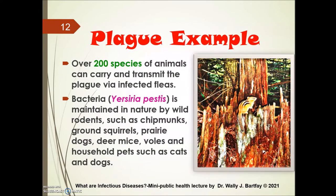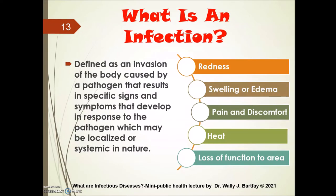Here's a plague example. There are over 200 species of animals that can carry and transmit plague via infected fleas, including chipmunks. It is a bacterial infection — Yersinia pestis — maintained in nature by wild rodents such as chipmunks, ground squirrels, prairie dogs, deer mice, and also household pets such as cats and dogs.